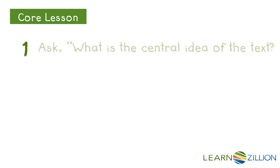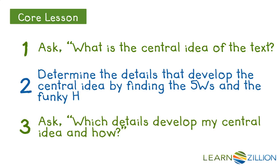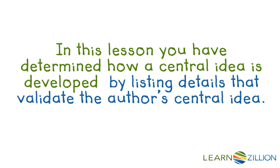In order to do that, we follow these three steps: ask what is the central idea of the text; determine the details that develop the central idea by finding the five W's and the one funky H; and finally, ask which ideas develop my central idea and how. In this lesson, you have determined how essential ideas develop by listing details that validate the author's central idea.